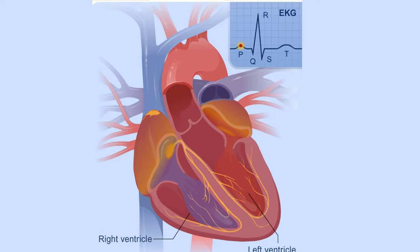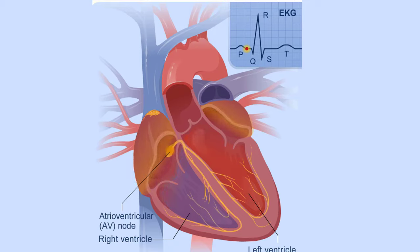The signal arrives at the atrioventricular, or AV node, near the ventricles. Here it is slowed for an instant to allow your heart's right and left ventricles to fill with blood. On an EKG, this interval is represented by the start of the line segment between the P and Q wave.